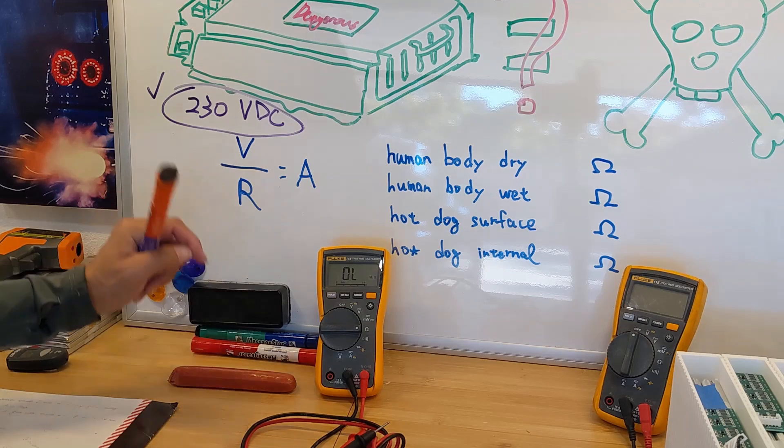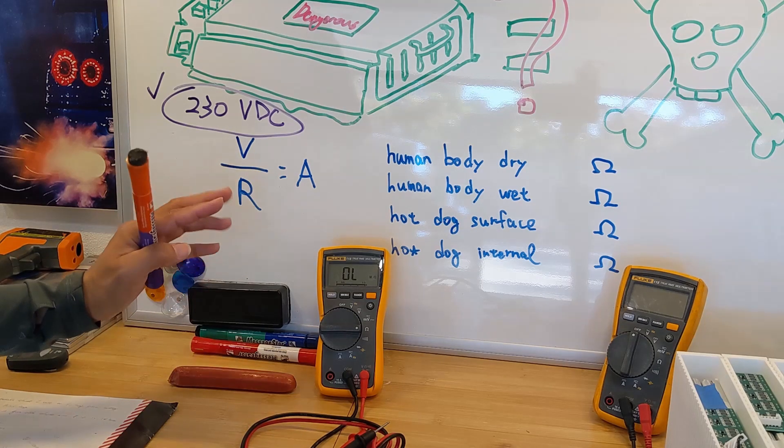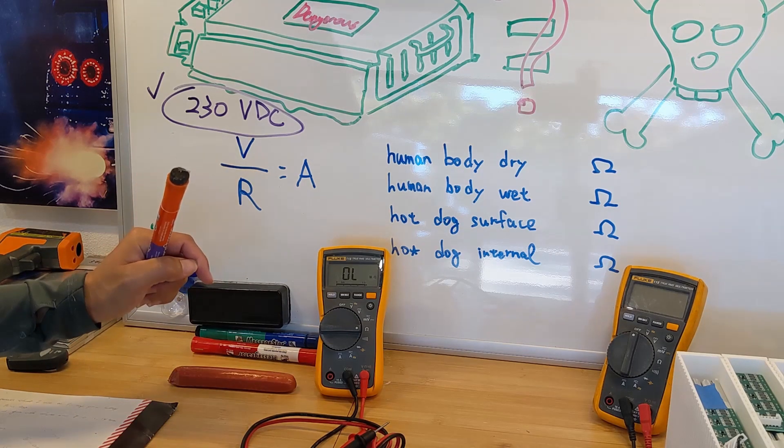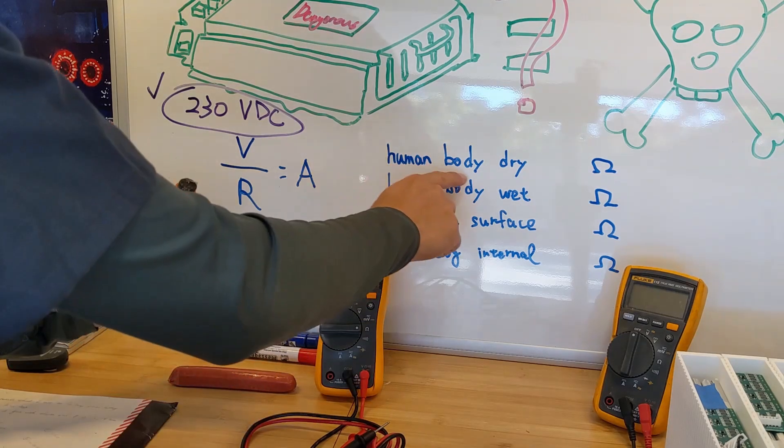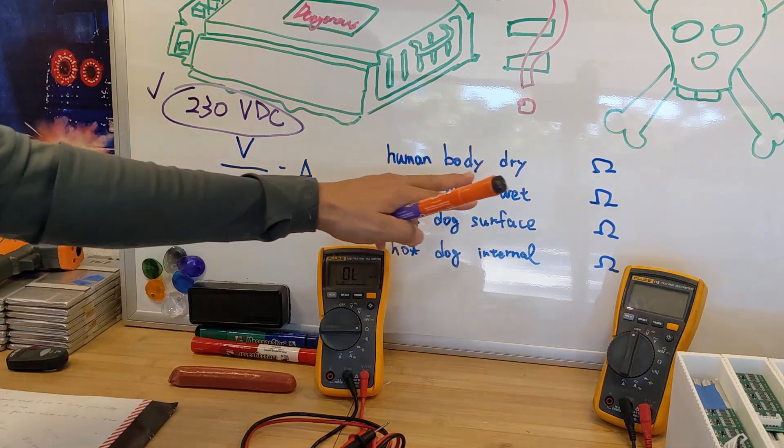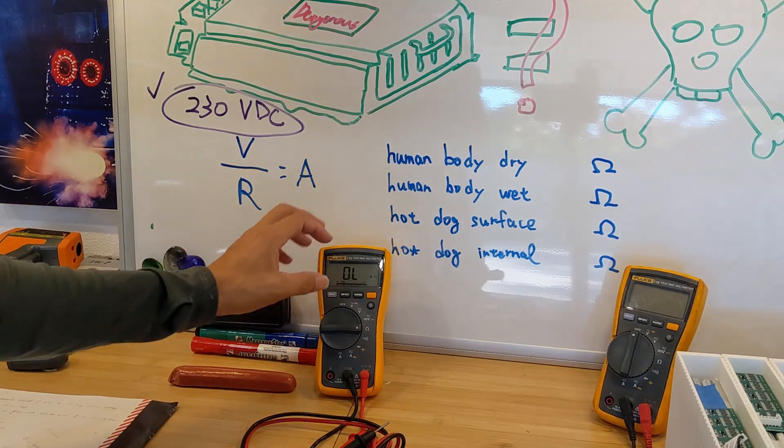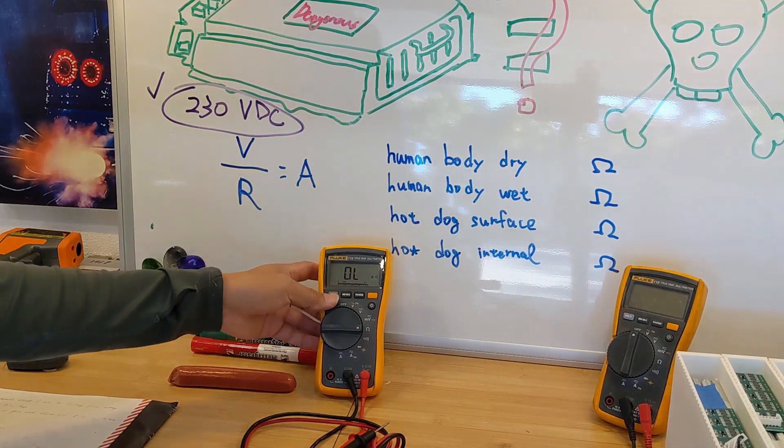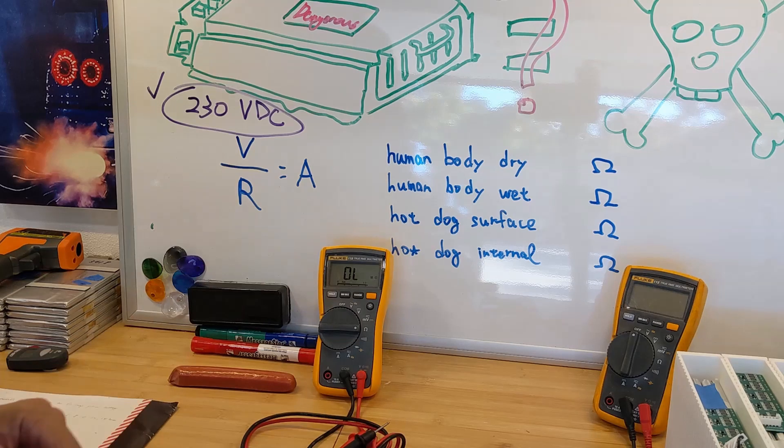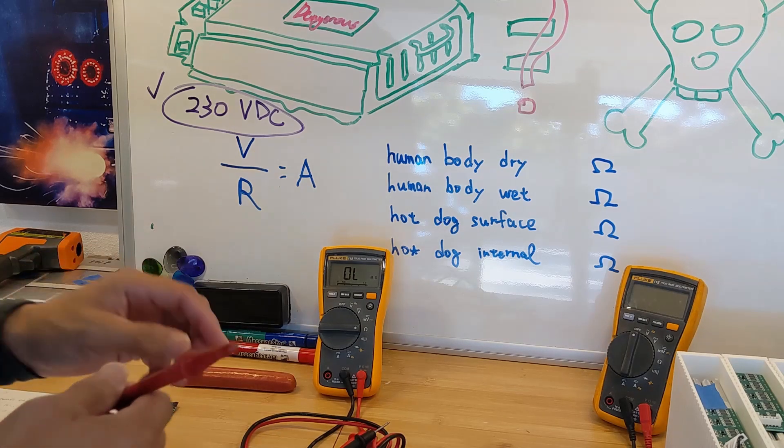Alright, let's talk about resistance. So I live in Southern California, it's pretty dry over here. We're going to do some measurements on the human body in dry condition and human body in wet condition right now. I have a trusted Fluke voltmeter over here, measuring at the ohm right now.